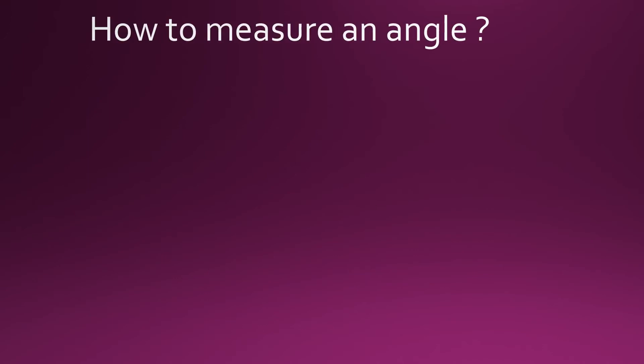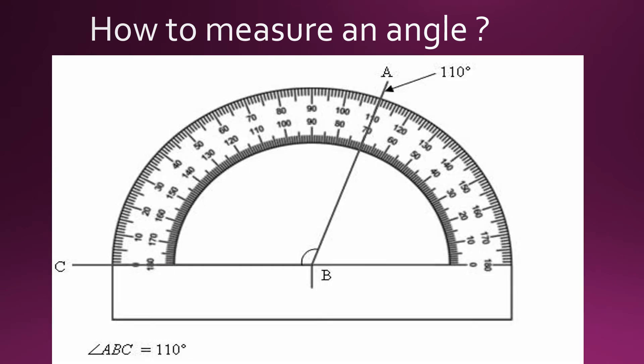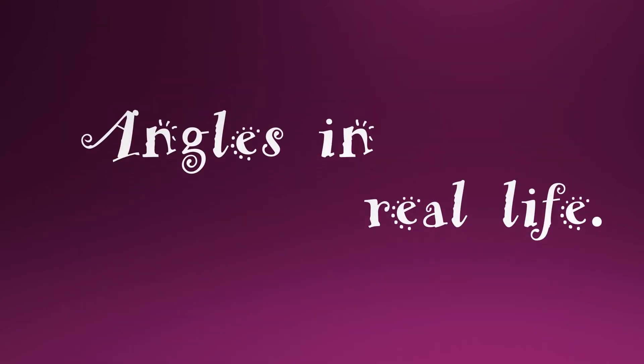So how do you measure an angle? With the help of a protractor, you can easily measure any angle. In this protractor, you can see the angle ABC is measured as 110 degrees. Did you know there are angles in real life too?